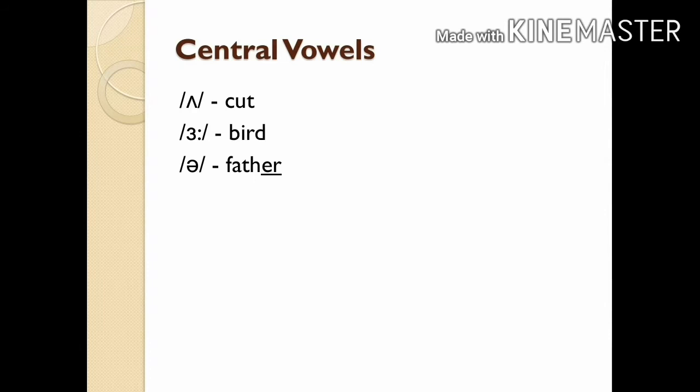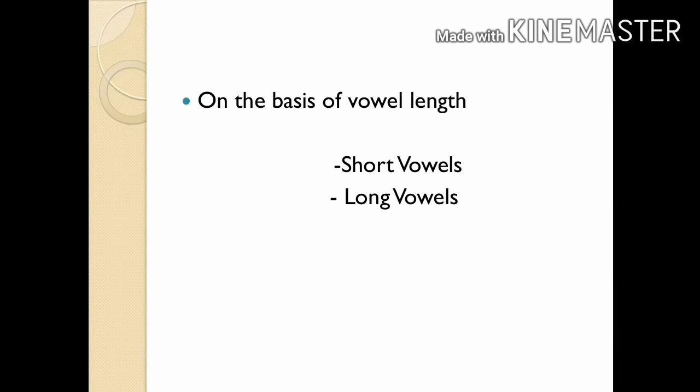Vowels articulated with the center of the tongue raised towards the part of the roof of the mouth which is between the hard palate and the soft palate are known as central vowels. There are three central vowels in English: /ʌ/ as in 'cut,' /ɜː/ as in 'bird,' and /ə/ as in 'father.'